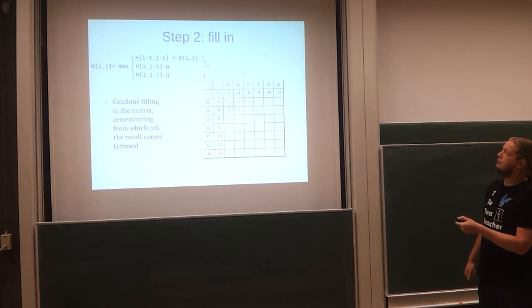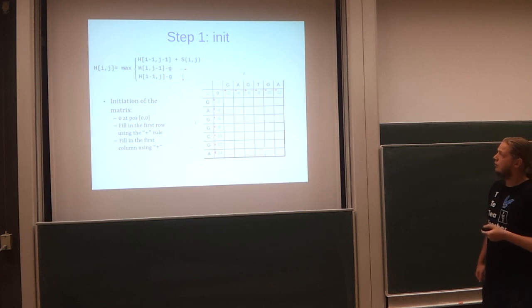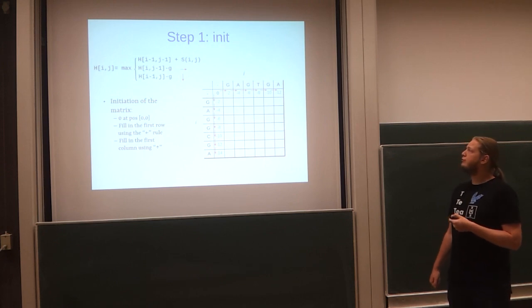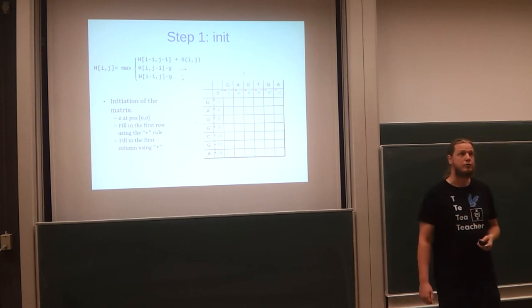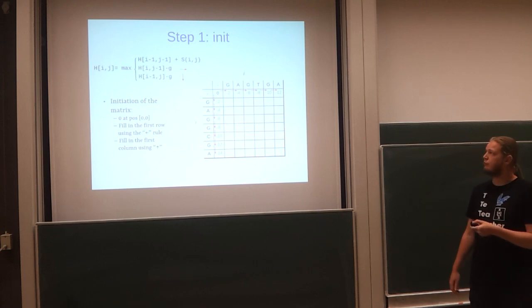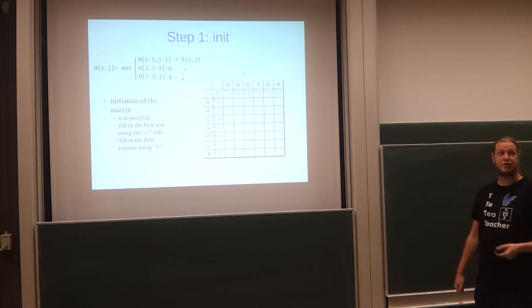They are the cell to your top left, plus the substitution score. Or the cell to your left, plus the gap penalty. Or the cell above you, plus the gap penalty. So, to the top left, to the left, or to the top. What you do then, is you calculate each of those three values, and you pick the maximum as the max function. For the first row, this is very easy. Right? You don't have a cell to your top, and you don't have a cell to your top left. So, you must have come from the left. So, you fill in the value to your left, plus the gap penalty. In this case, minus two, minus four, minus six. You see how this works. This is called initialization.